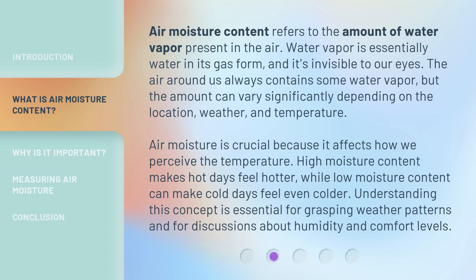Air moisture content refers to the amount of water vapor present in the air. Water vapor is essentially water in its gas form, and it's invisible to our eyes. The air around us always contains some water vapor, but the amount can vary significantly depending on the location, weather, and temperature. Air moisture is crucial because it affects how we perceive the temperature. High moisture content makes hot days feel hotter, while low moisture content can make cold days feel even colder. Understanding this concept is essential for grasping weather patterns and for discussions about humidity and comfort levels.